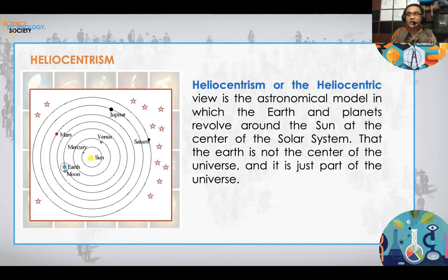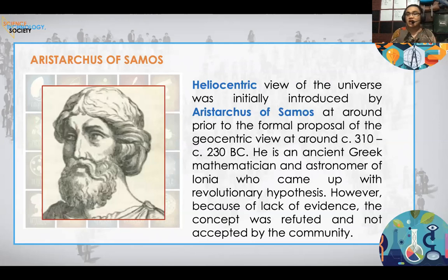When heliocentrism arrived, it was not easy, because there was already an existing philosophy called geocentrism, which made it difficult to introduce heliocentrism. The first person to introduce it was Aristarchus of Samos, who existed around 310 to 230 BCE. He was an ancient Greek mathematician and astronomer from Ionia, and he conceptualized the revolutionary hypothesis of heliocentrism.